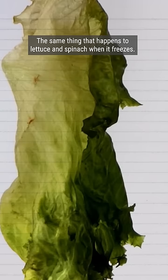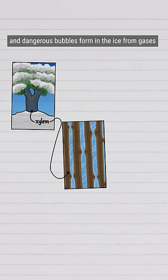Cold weather also means that water in the tree's plumbing system freezes, and dangerous bubbles form in the ice from gases that were previously dissolved in the liquid water.